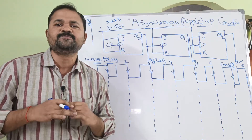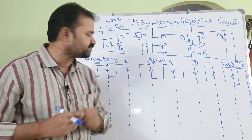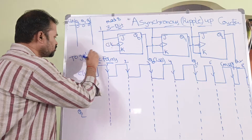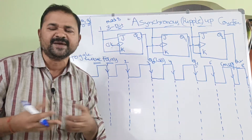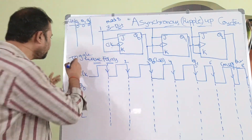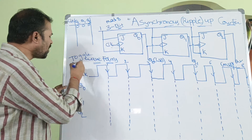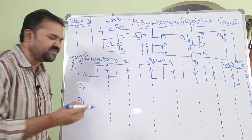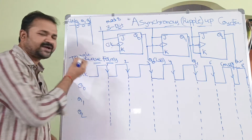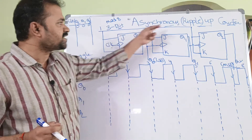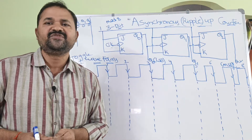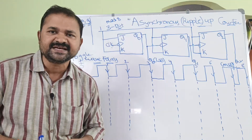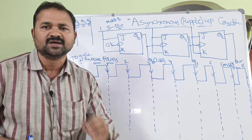In order to implement an asynchronous counter, we require toggle operation. Toggle means complementing — if the input is 0, it will be complemented to give 1. If the input is 1, then it will be toggled to give 0. So in order to implement an asynchronous counter, we require toggle flip-flops such as a JK flip-flop or a T flip-flop.